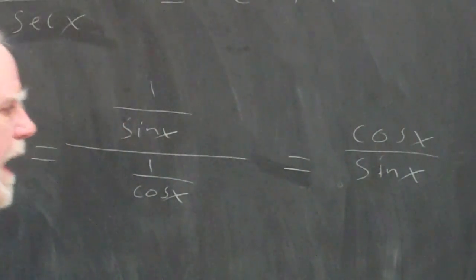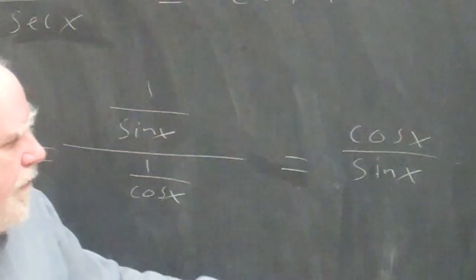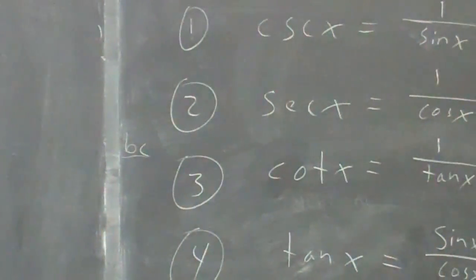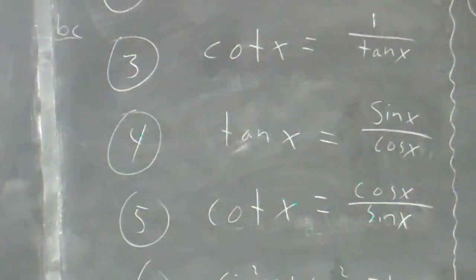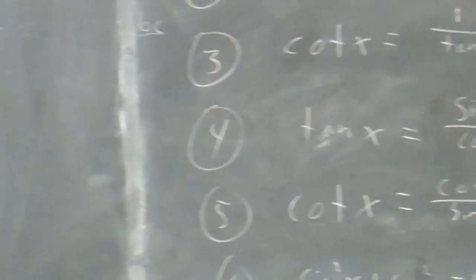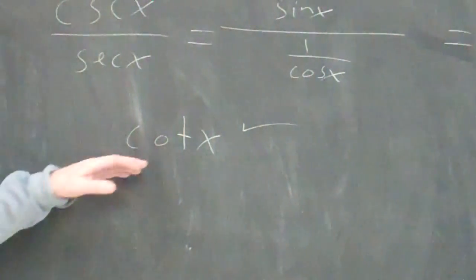And by the eight fundamental identities, in fact it's number five, the cosine x over the sine x is cotangent x. So I've proved it. Done.